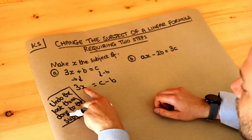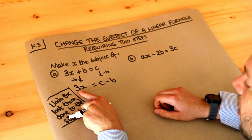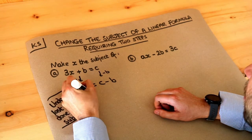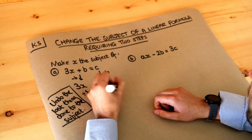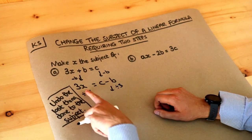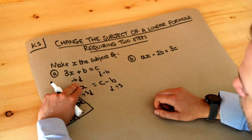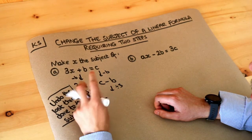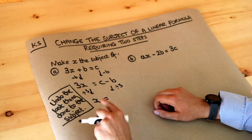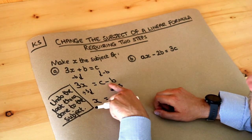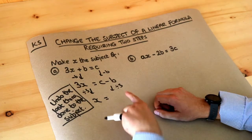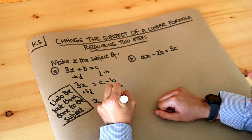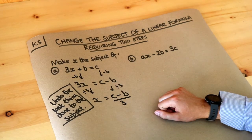So what's the last thing done to x? Well it was times by 3. So to get rid of the times by 3 we have to divide both sides of the equation by 3. Dividing the 3x by 3 undoes the multiplication leaving just x — 3 lots of x divided by 3 gives just 1 lot of x. And then we put c minus b all over 3 as a fraction, because putting it over 3 means divide by 3.